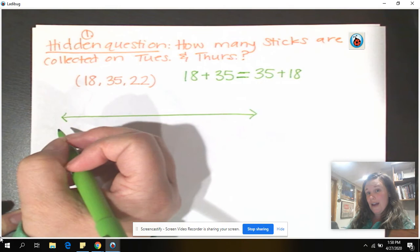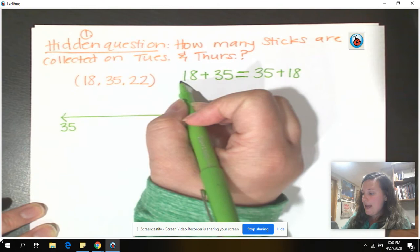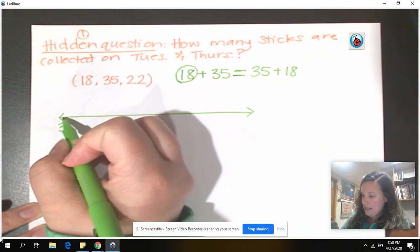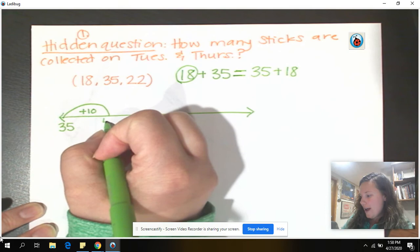So 35. Now, if I'm looking at my 18 here, let's jump easy. That awesome 10. Let's jump by 10. Plus 10. So 35 plus 10 is 45.